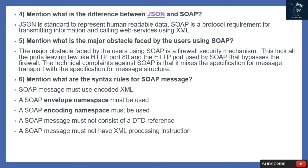Question 5: What is the major obstacle faced by users using SOAP? The major obstacle is the firewall security mechanism, which locks all ports leaving few open like HTTP port 80. The HTTP port used by SOAP bypasses the firewall. A technical complaint against SOAP is that it mixes the specification for message transport with the specification for message structure.